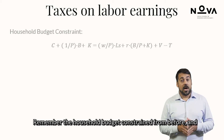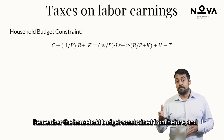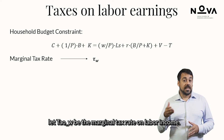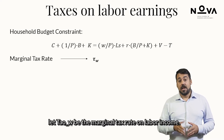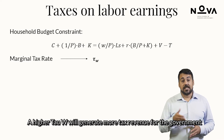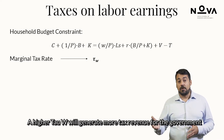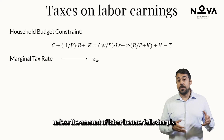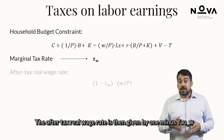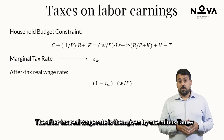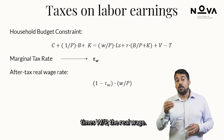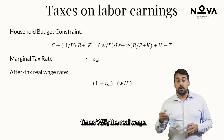Recall the household budget constraint. Let τ_w be the marginal tax rate on labour income. A higher τ_w will generate more tax revenue for the government, unless the amount of labour income falls sharply. The after-tax real wage rate is then given by (1 − τ_w) × (w/p), where w/p is the real wage.